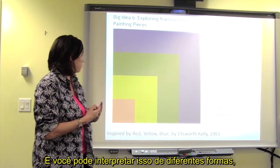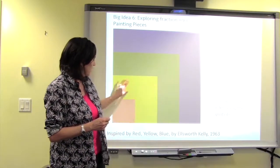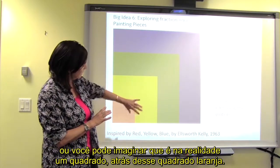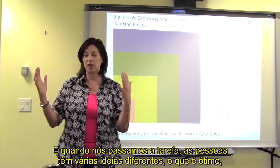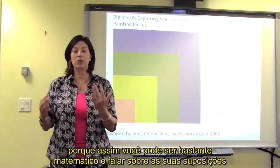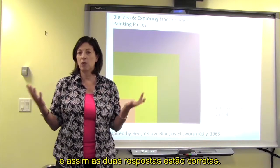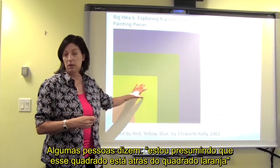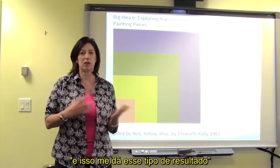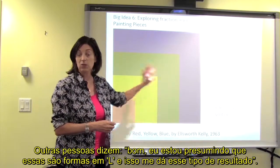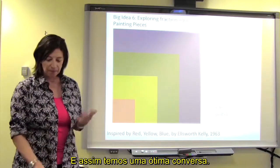You can interpret the image in different ways. You could see the yellow part as an L-shape, or you could imagine it's actually a square behind the orange square. When we give it out, people have different ideas, which is wonderful — because then you can do something very mathematical: talk about your assumptions. Both answers are correct. Some say 'I'm assuming the square is behind the orange square,' and others say 'I assumed these were L-shapes,' giving different results — and then you have a great conversation.